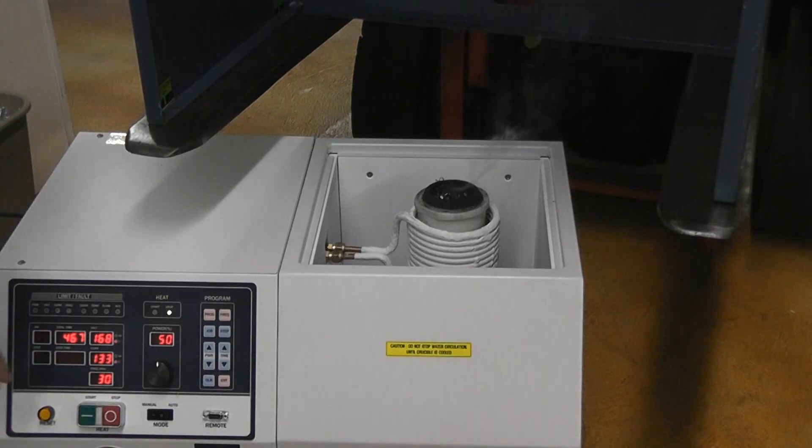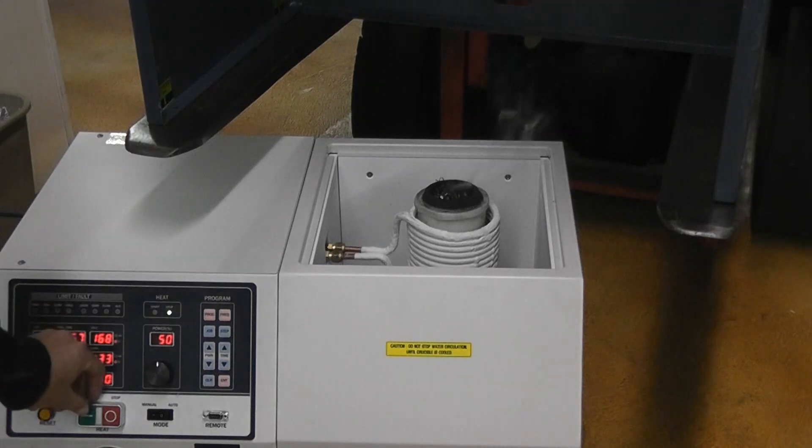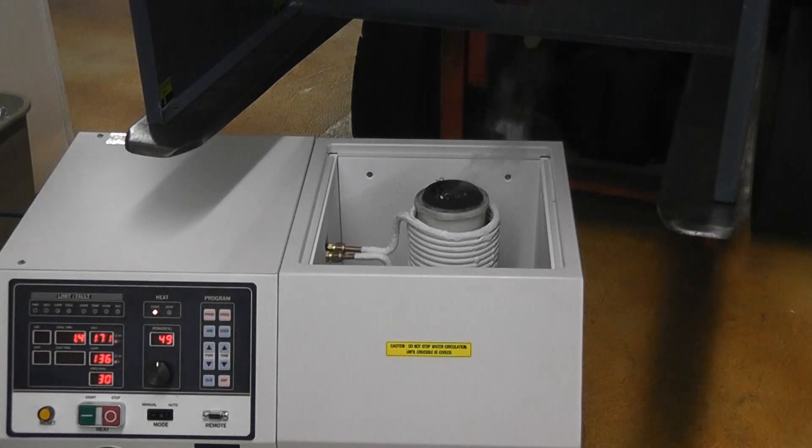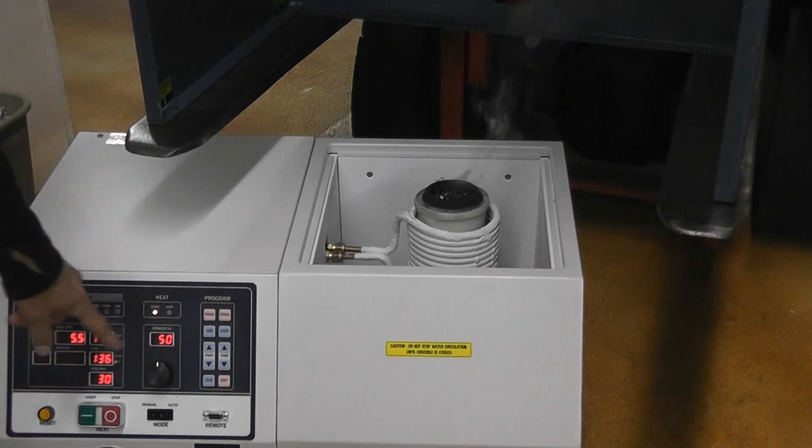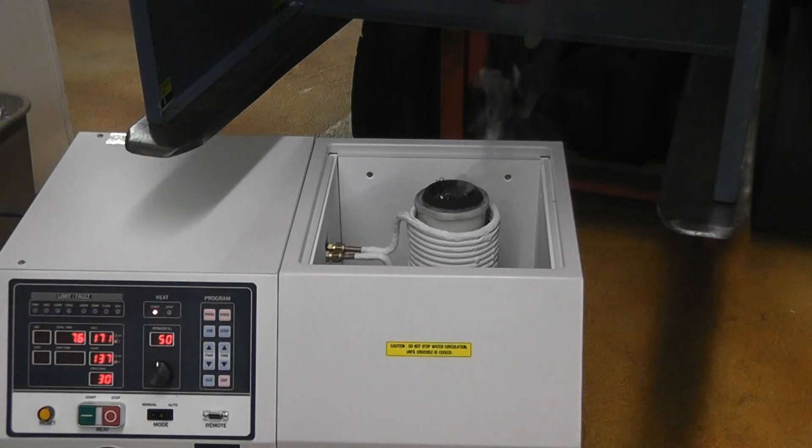Okay, the crucible is inside the furnace and we're turning the power on now. In approximately 5 minutes the material should be molten and we'll be pouring our bar.